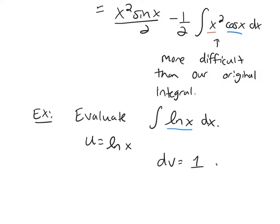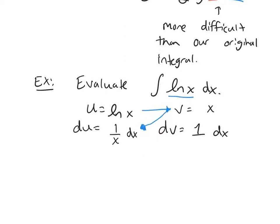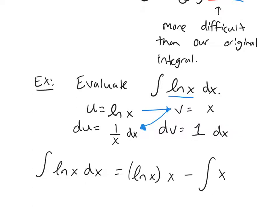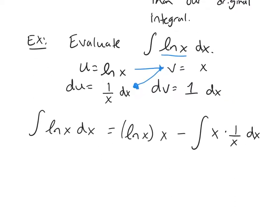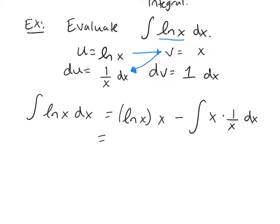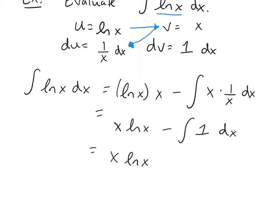I'll put 1 dx in the dv spot and fill out the table. The derivative of ln(x) is 1/x dx, and the integral of 1 is x. Going horizontally across then diagonally down: the integral of ln(x) equals ln(x) times x minus the integral of x times (1/x) dx. We can simplify that remaining integral to just 1, and the integral of 1 is x. So the answer is x ln(x) minus x plus C.